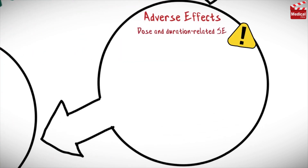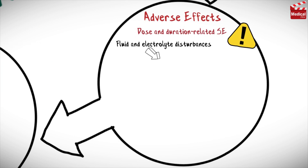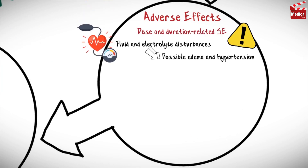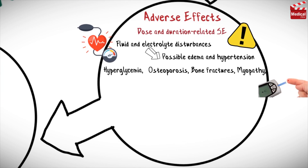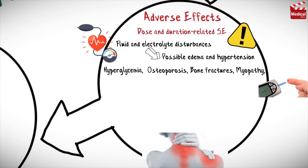Dose and duration-related side effects of prednisone include fluid and electrolyte disturbances with possible edema and hypertension, hyperglycemia, osteoporosis, bone fractures, myopathy, and menstrual irregularities.